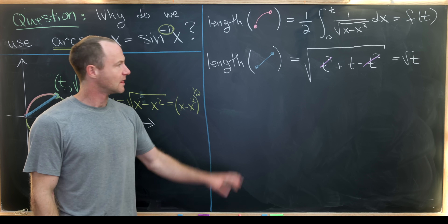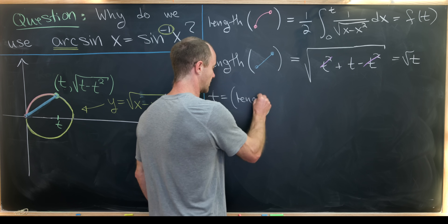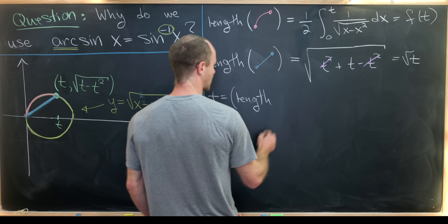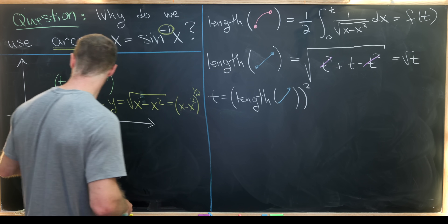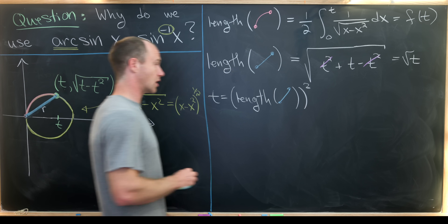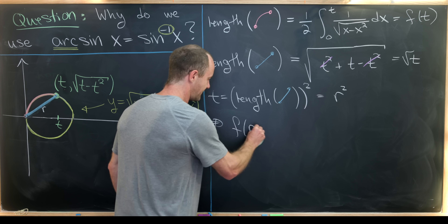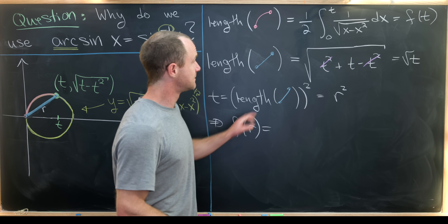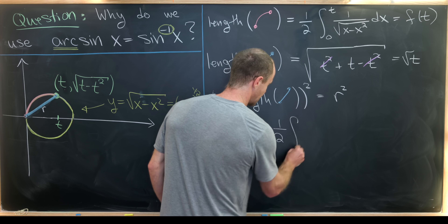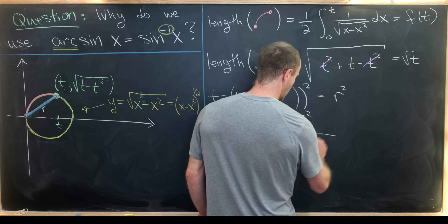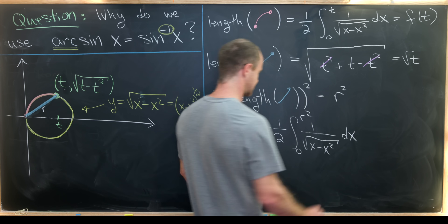Since this distance equals sqrt(t), we have t = r², letting r denote that distance. Substituting, f(r) — the arc length as a function of the distance r from the origin — equals one half times the integral from 0 to r² of 1 over the square root of x minus x squared, dx.